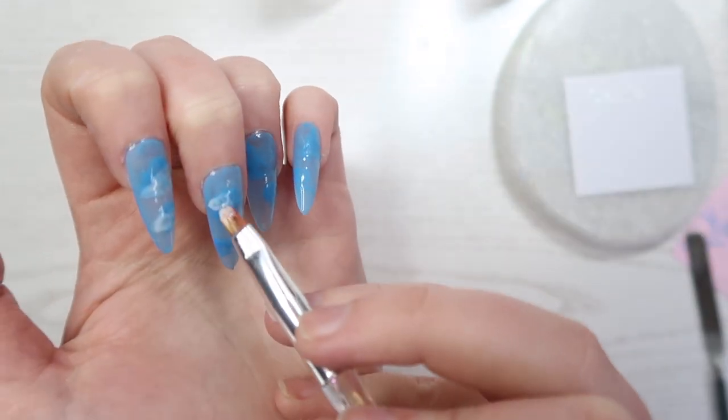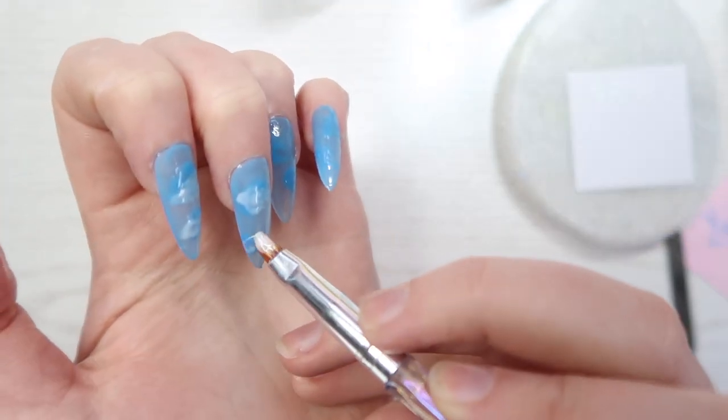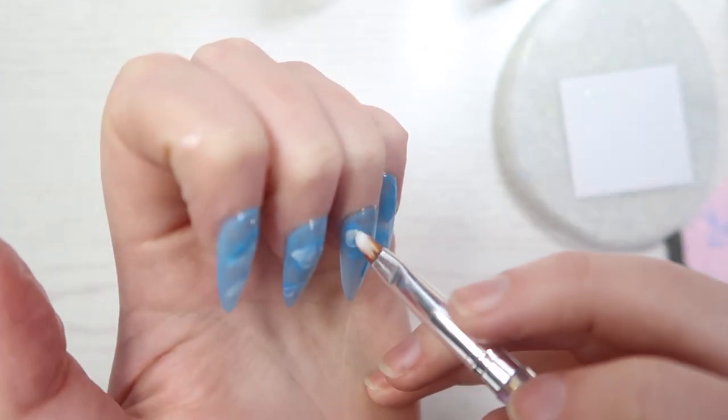I do not have a technique for this. I am just dabbing the white milky color on top of the blue splotches and you will see how it goes.